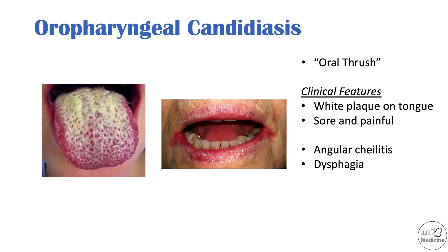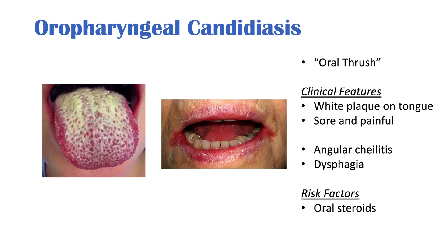Risk factors for oropharyngeal candidiasis include immunocompromise and oral steroid exposure. This includes inhaled steroids used in asthma or COPD — if the steroid gets in the mouth or throat and is not washed out, it can cause localized immunosuppression, giving candida species a chance to flourish. It is advisable to wash the mouth out after using inhaled steroids to reduce the risk of oral thrush.